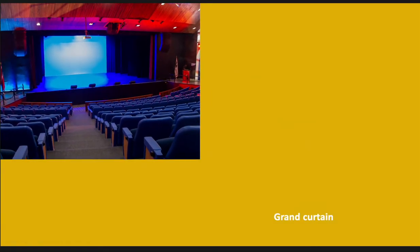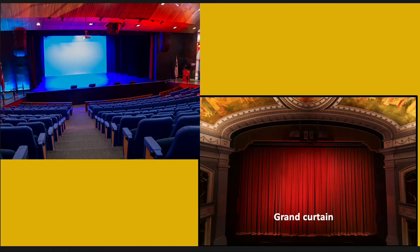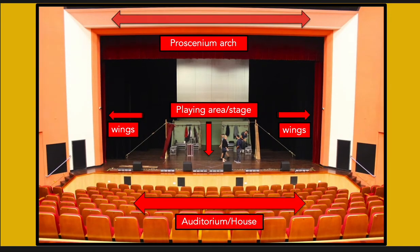Here is a picture of a proscenium stage at the Naparima Bowl. One of the defining features is the grand curtain, also called grand drapes, which closes off that imaginary fourth wall from the audience, separating the playing area from the audience area or from the orchestra pit depending on the theater's design. This diagram shows the proscenium arch at SAPA — the Southern Academy for the Performing Arts in Trinidad. Not much of an arch, but we still call it a proscenium arch. The wings lead off-stage or backstage, the playing area is where all the action happens, and the auditorium or house is where the audience is situated.